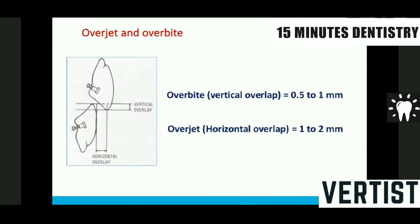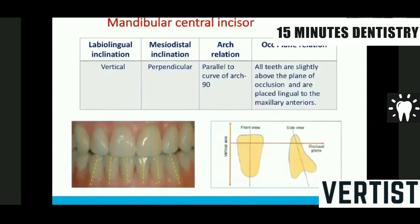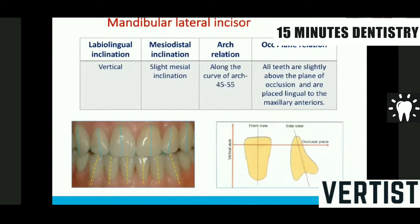Let's start with the arrangement of anterior lowers. Overbite should be 0.5 to 1 mm and overjet should be 1 to 2 mm — this improves aesthetics, phonetics, and balance in protrusion. Mandibular central incisors are vertical labiolingually, perpendicular mesiodistally, and parallel to the arch form. All the teeth are placed a couple of millimeters above the occlusal plane to get the overbite. The lateral incisor is vertical with a slight mesial inclination, almost perpendicular to the plane in the frontal view.